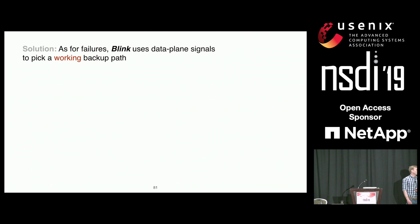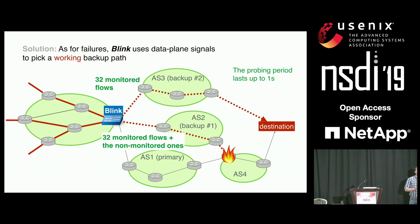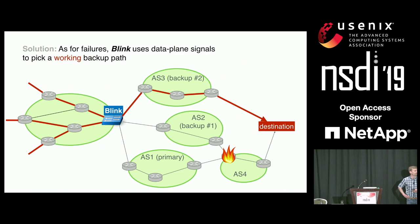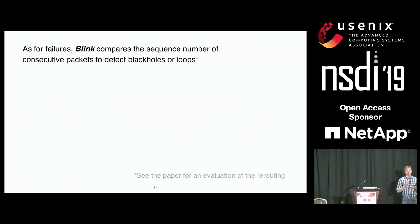The good news is that Blink uses data plane signals to assess whether a next hop is working, and then picks a working one. When Blink detects a failure, it sends half of the monitored flows to each backup next hop — IS-2 and IS-3. All non-monitored flows first go to IS-2. Blink uses those flows to assess whether each next hop is working. It will realize IS-2 is not working and send all traffic to IS-3, restoring connectivity. To detect loops and black holes, it again looks at consecutive packets with the same sequence number — black holes cause continued retransmissions, and loops cause the same packets to appear again and again very frequently.